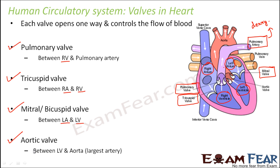Finally, the aortic valve is present between the left ventricle and the aorta. The aorta is an artery and it is the largest artery in the body. From the left ventricle, oxygenated blood enters the aorta and from there it goes to different parts of the body. The valve here, called the aortic valve, controls this flow.